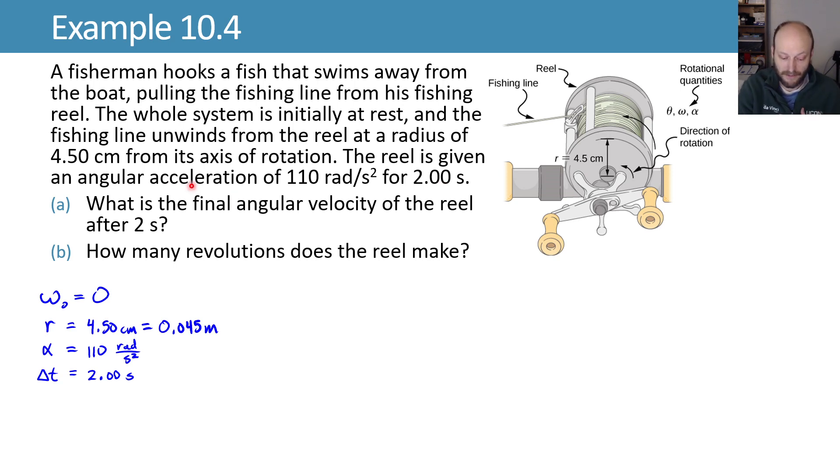And then from part a, what are we trying to find? We're trying to find omega final, the final angular velocity. To do this, we'll note that we have constant angular acceleration. So, we can use constant angular acceleration equations. How do we know constant? Well, we're given a single value for angular acceleration that lasts for those full two seconds, so we can use these values.